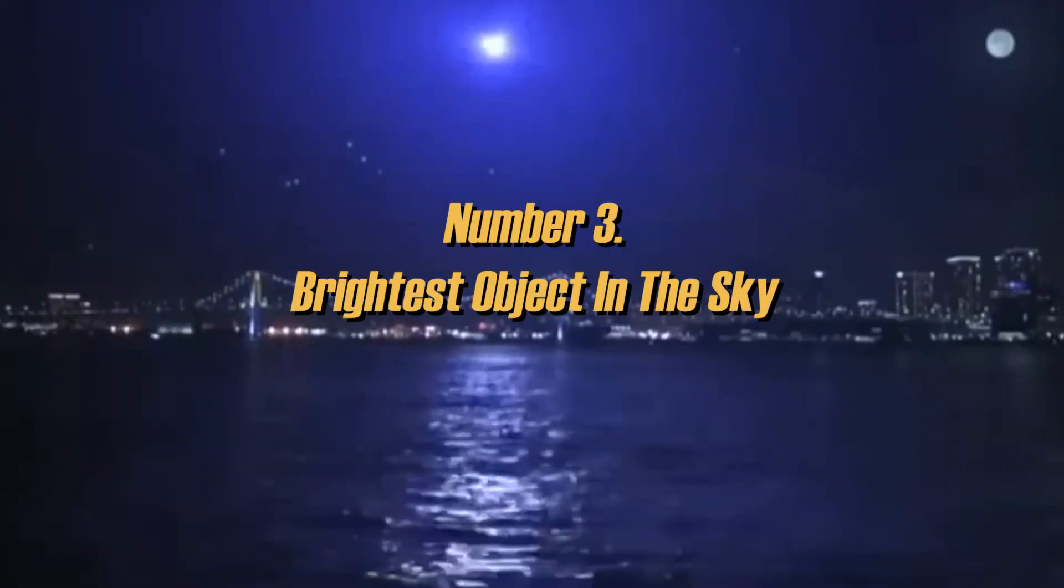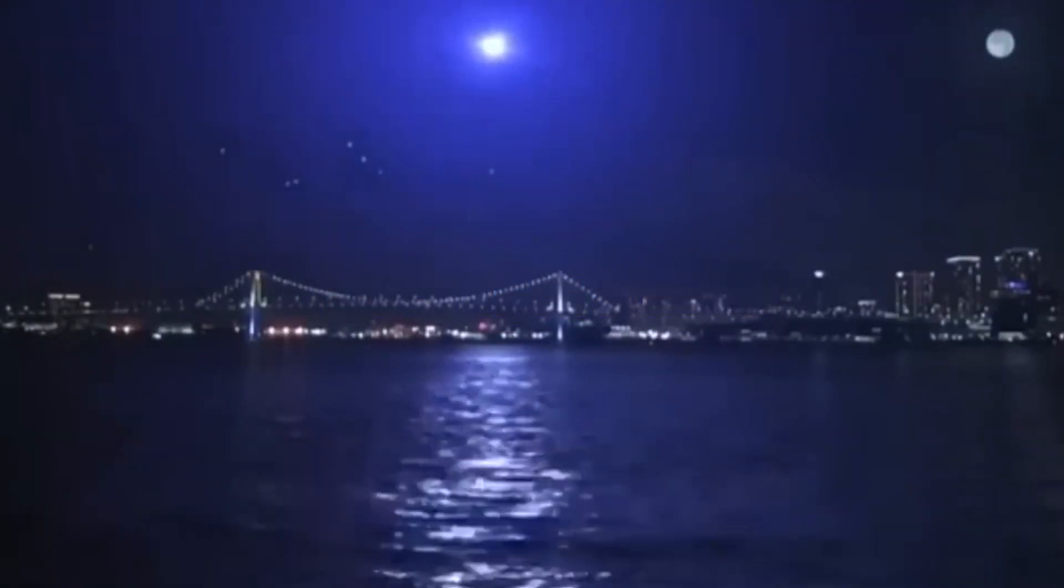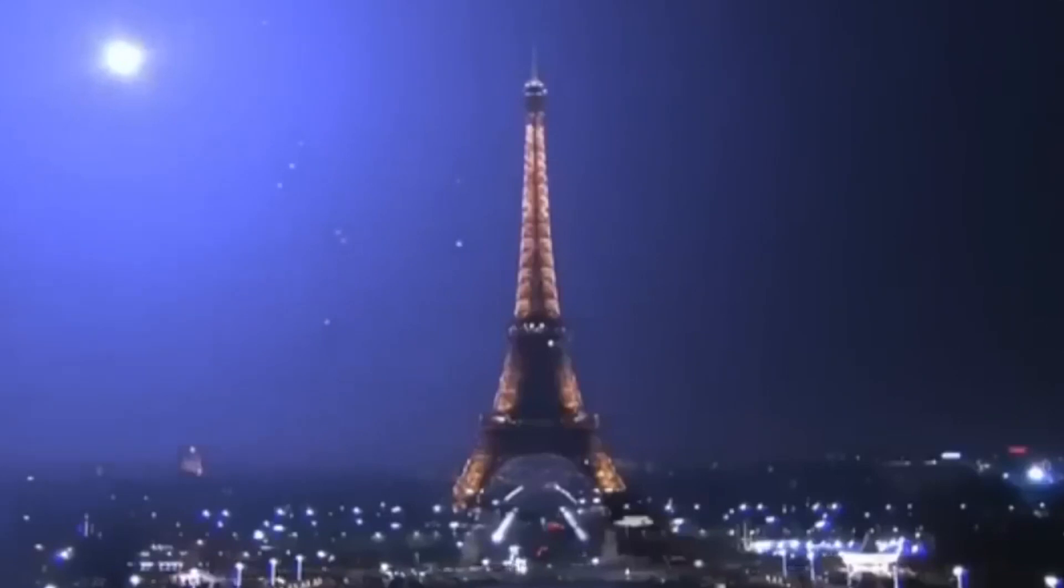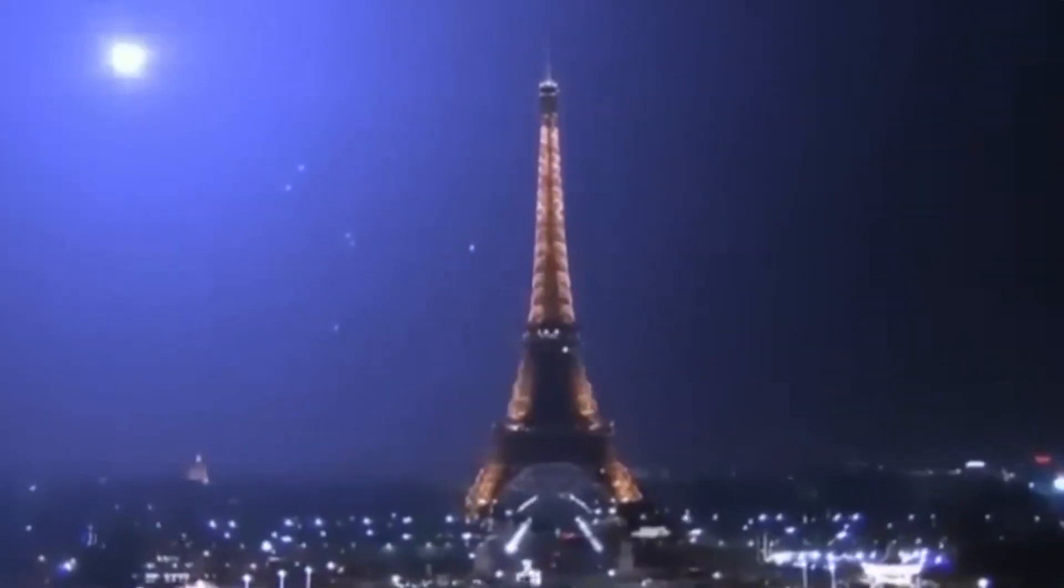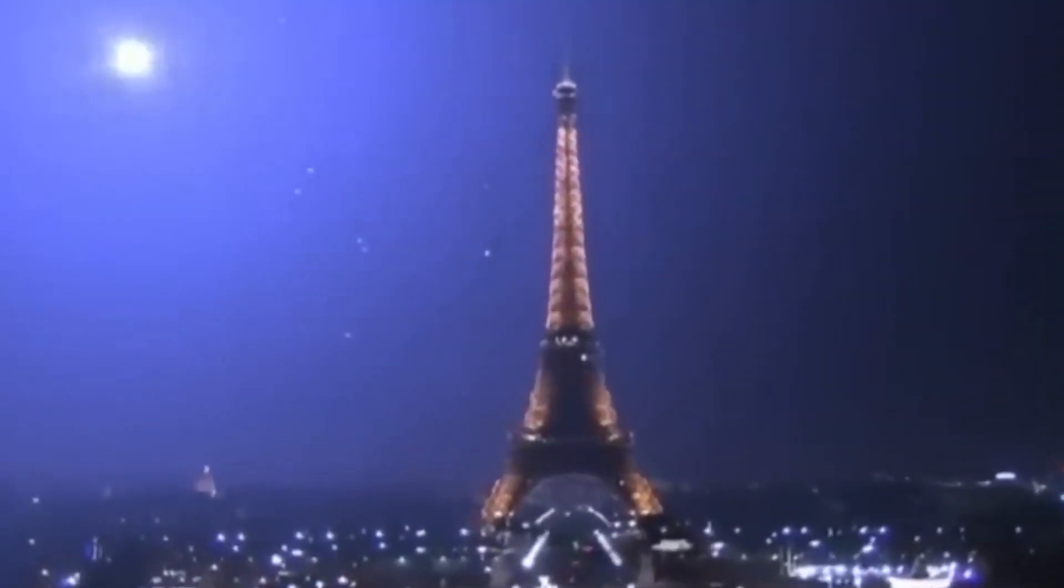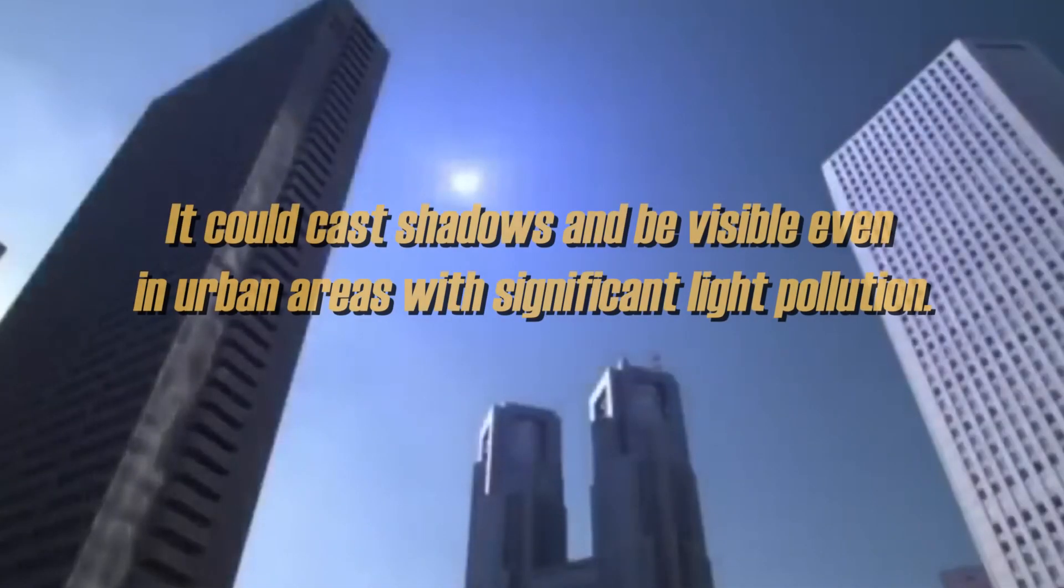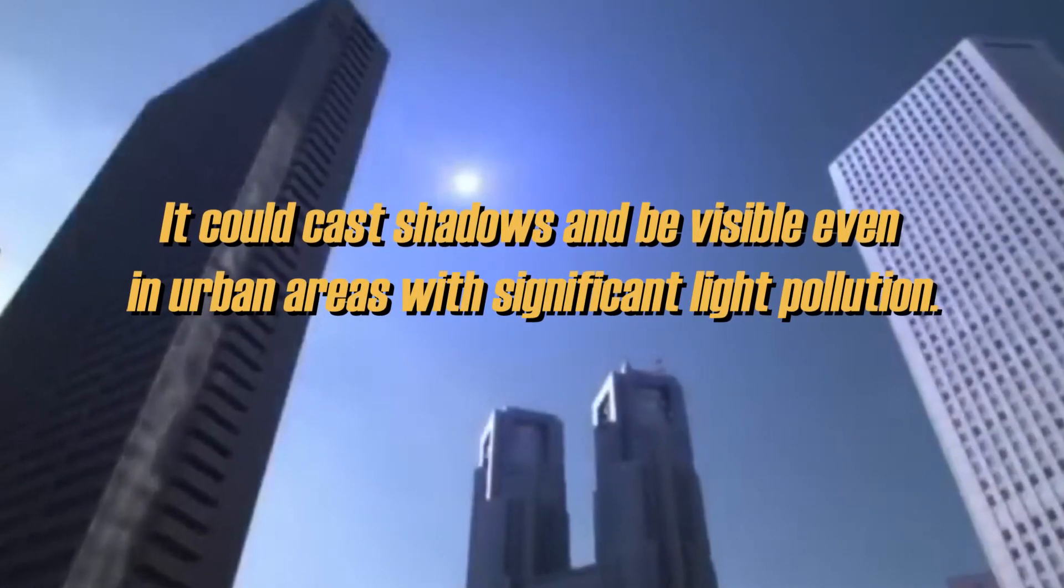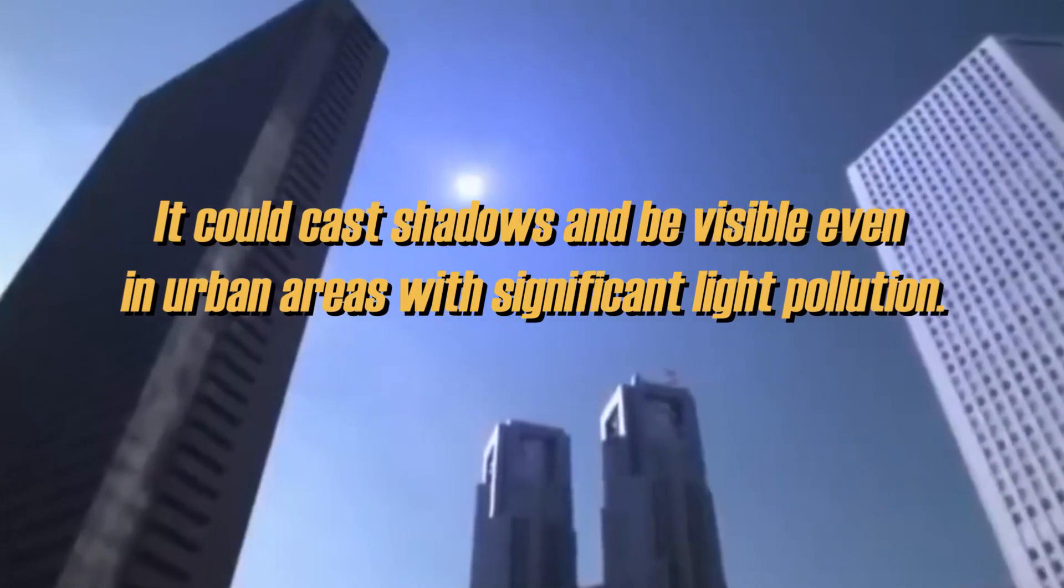Brightest object in the sky. During its phase of maximum luminosity, the Betelgeuse supernova would be the brightest object in the sky, surpassing any star. It could cast shadows and be visible even in urban areas with significant light pollution.